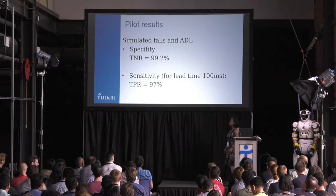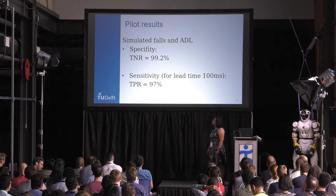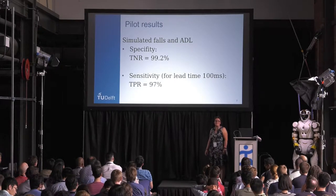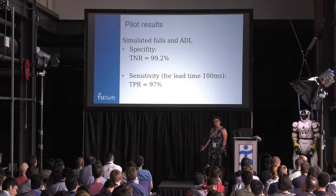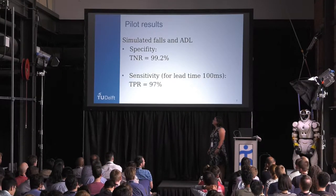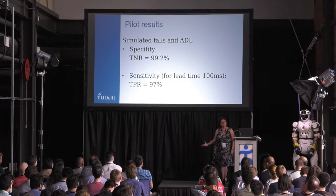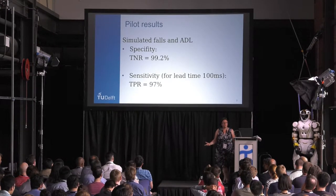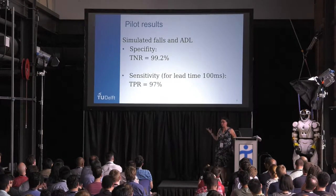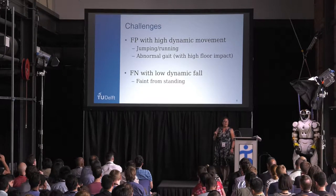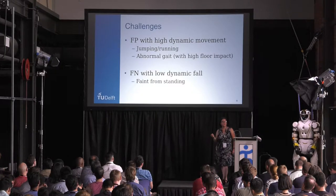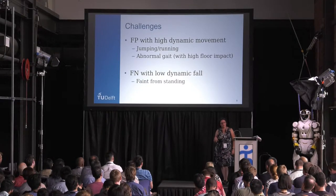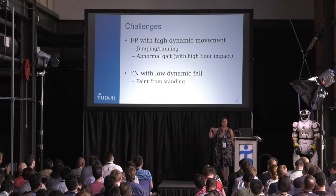I used this to develop a fall detection algorithm and did some pilot studies. I asked a couple of people to simulate falls and perform activities of daily living. The specificity — the true negative ratio — was 99.2%, and the sensitivity — the true positive ratio — was 97%. The remaining challenges are false positives from high dynamic movements such as jumping, running, and abnormal gait patterns with high impacts, and false negatives for low dynamic falls, such as fainting from standing.